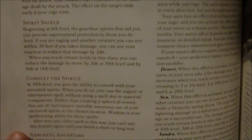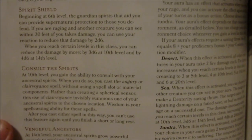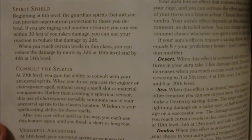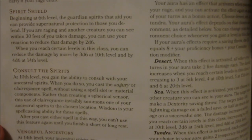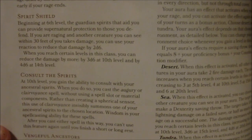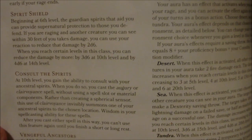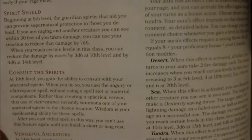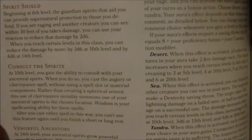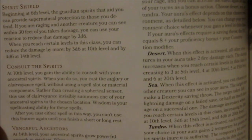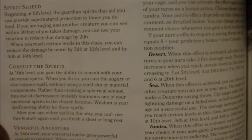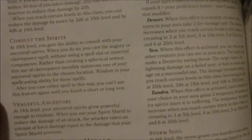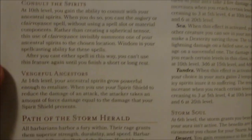At 10th level, you get Consult the Spirits. You gain the ability to cast augury or clairvoyance without using a spell slot or material components. Rather than creating a spherical sensor, this use of clairvoyance invisibly summons one of your ancestral spirits to the chosen location. Wisdom is your spellcasting ability for these spells. After you cast either spell this way, you can't use this feature again until you finish a short or long rest. It's a good way to learn about your surroundings.